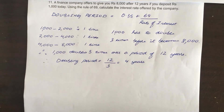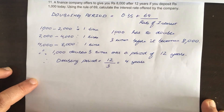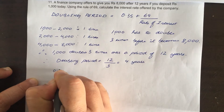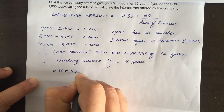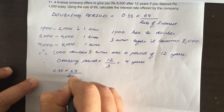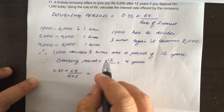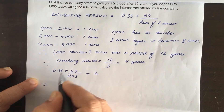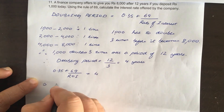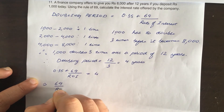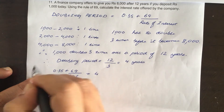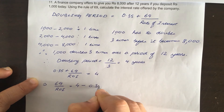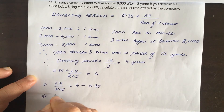Now we have to find the rate of interest. Bringing in the equation: 0.35 plus 69 divided by the rate of interest equals the doubling period, which we've already found to be 4. So 69 divided by ROI equals 4 minus 0.35.